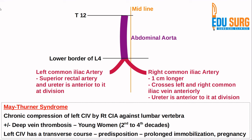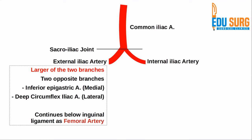Prolonged immobilization and pregnancy are risk factors for May-Thurner syndrome. The external iliac artery continues below the inguinal ligament as the femoral artery. Its two branches are exactly opposite to each other: medially you have the inferior epigastric artery, and laterally — exactly opposite the origin of the inferior epigastric artery — is the deep circumflex iliac artery.